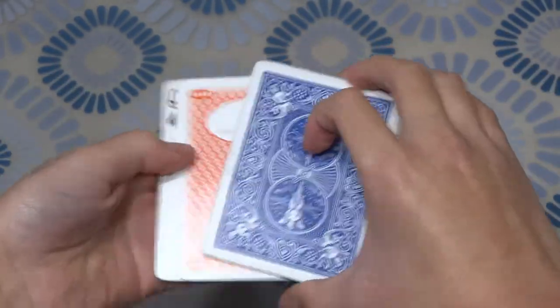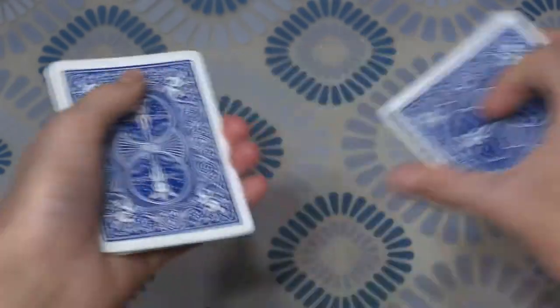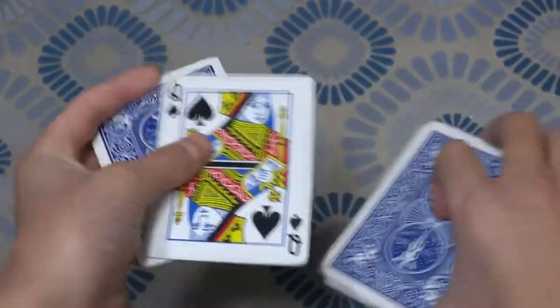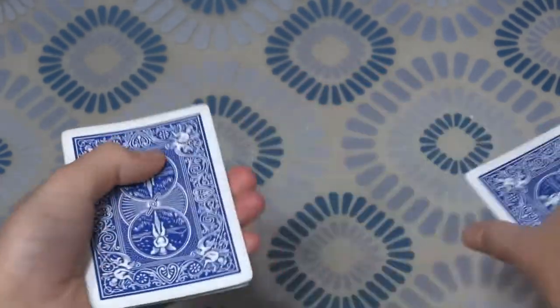And then you do another Elmzy Count. And then the third Queen should flip over.